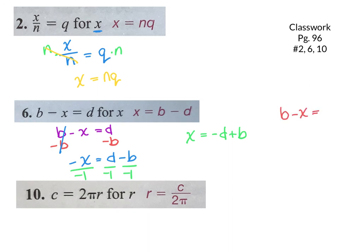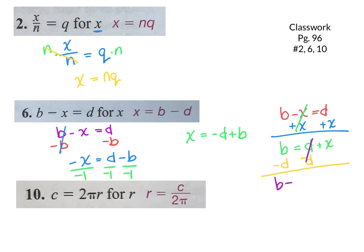The other way: you have B minus X equals D. You could add the X over, leaving just B on this side and D plus X on that side. Then subtract the D, and you end up with B minus D equals X. You'll notice in both approaches D is negative and B is positive — negative D plus B and B minus D are the same answer. Both work.